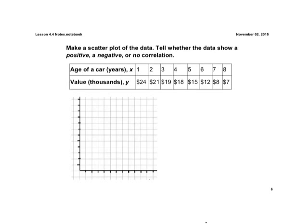For the first one, we have age of a car in years, and we have the value in thousands of dollars. So if our car is one year old, on our x-axis, we will label all our points here: 1, 2, 3, 4, 5, 6, 7, 8.